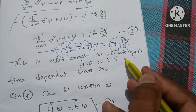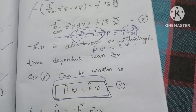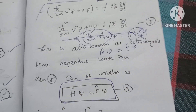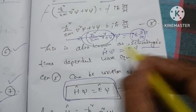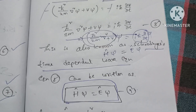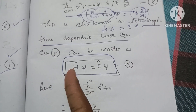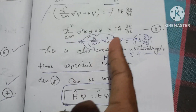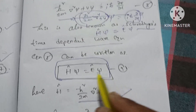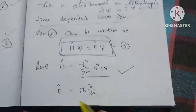This is equal to Ê (E-cap), the Hamiltonian operator. That is Schrödinger's time-dependent wave equation. Ĥ = E value; Ê is equal to the energy value.